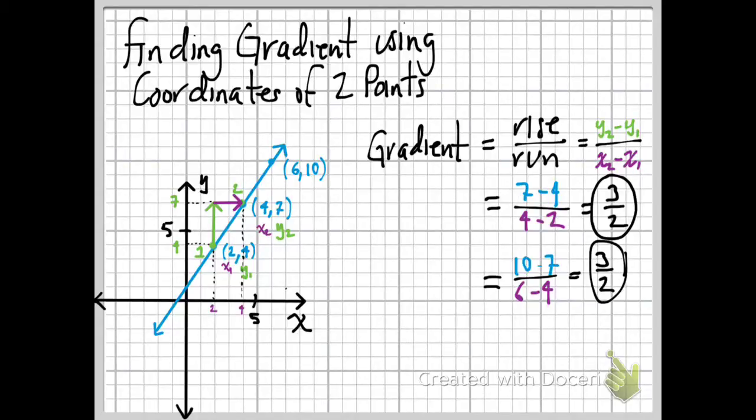We could even go from the first point that we started with all the way up to that second one, right? And we'd get 10 minus 4 over 6 minus 2. This y minus this y over this x minus this x. And it still looks a little bit different, because 10 minus 4 is 6, and 6 minus 2 is 4. And you might say, well, that's different. But guess what? 6 over 4 reduces to 3 over 2. So it does still work. It's still the same.